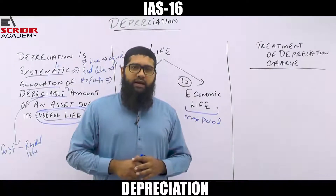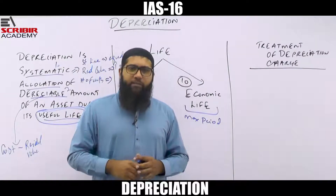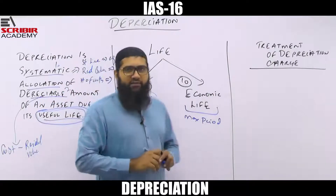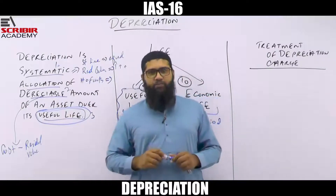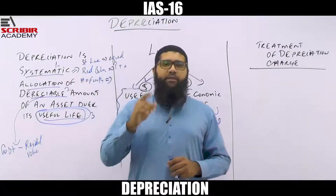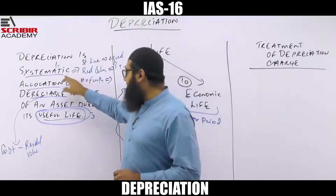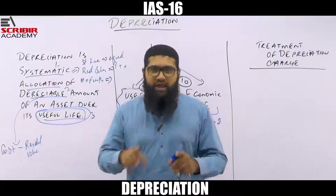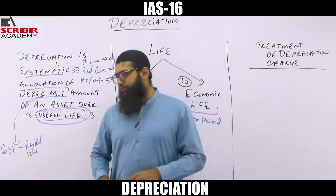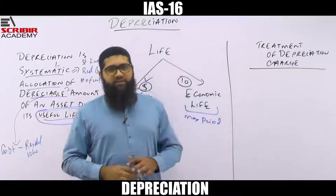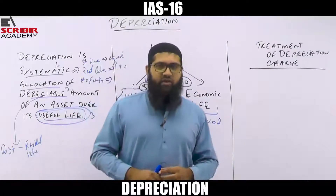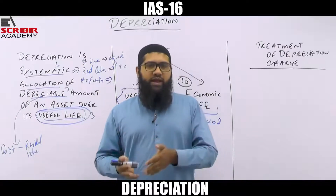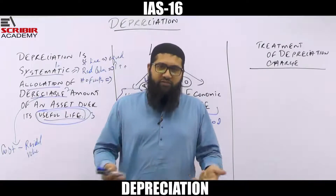So how do we depreciate the asset? We depreciate it over its useful life — not the economic life. This is an important thing to understand: depreciation is the systematic allocation of the depreciable amount of an asset over its useful life. Once you've established the depreciation, the next step is to recognize the depreciation expense in your financial statements.